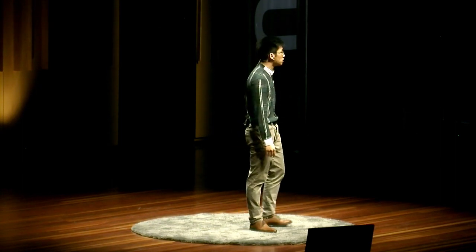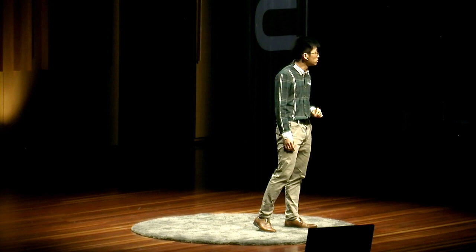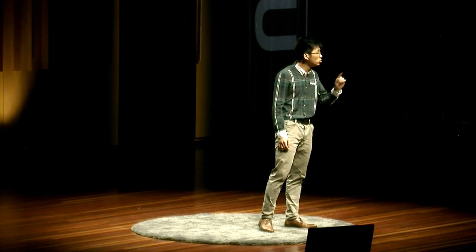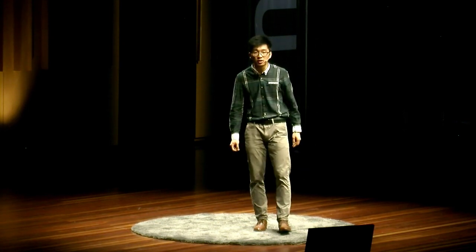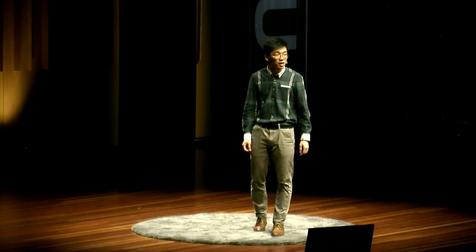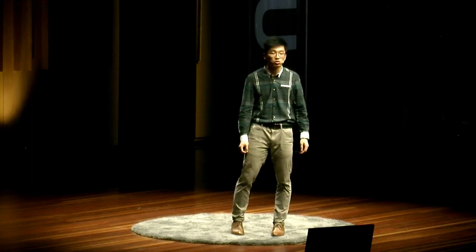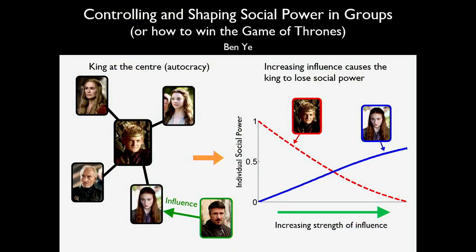But which of the four subjects surrounding the king would you pick to influence? How much influence is required exactly for the king to lose social dominance? We all intuitively guess at these questions, but my research uses mathematical analysis to give us the answers.